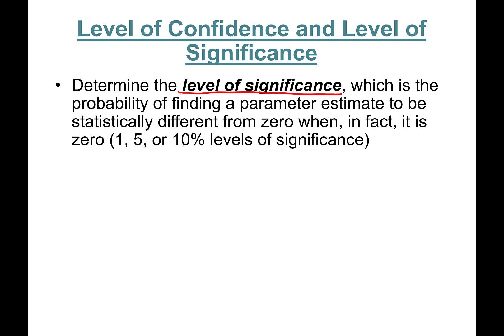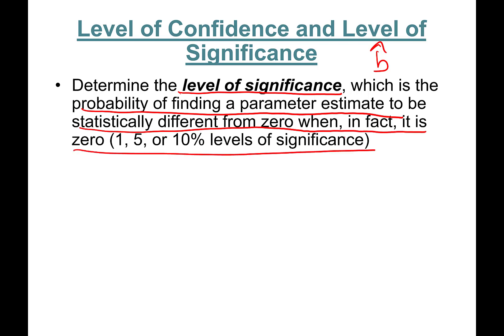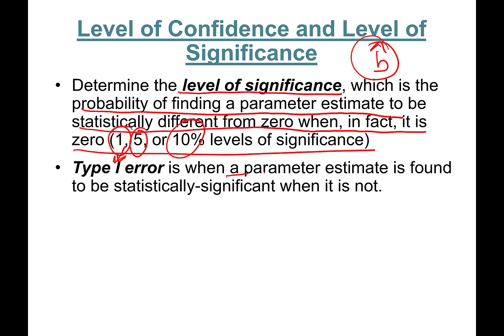The level of significance is the probability of finding a parameter estimate beta-hat to be statistically different from zero when in fact it is zero. For example, at 1% significance, 1% of the time you'll find beta-hat different from zero when it's actually zero — so 99% of the time you're correct. The lower the level of significance, the better. Five or ten percent is the maximum acceptable level.